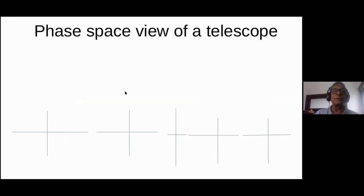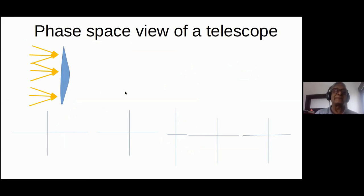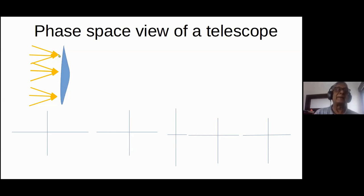We are now going to look at something very familiar: a telescope. This is the first lens called the objective. Instead of looking at just one parallel beam, suppose the telescope is looking at the sun, which subtends a finite angle of about half a degree. The uppermost three rays are a parallel beam coming from the top edge of the sun, the three middle rays come from the center, and the three lowest rays come from the bottom.